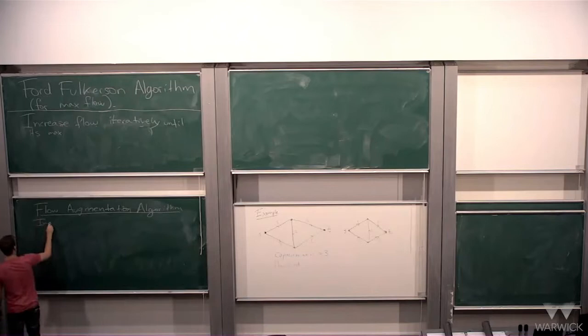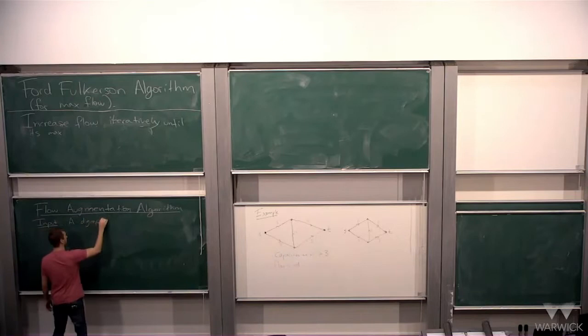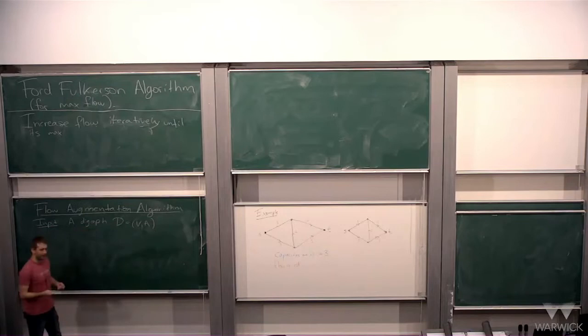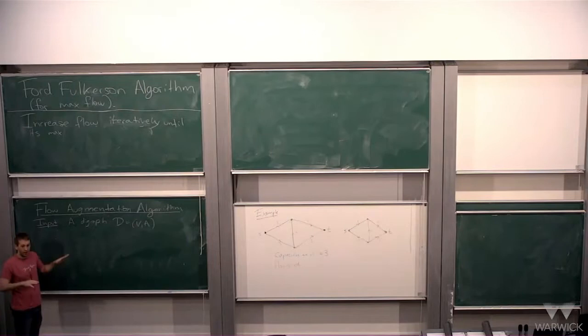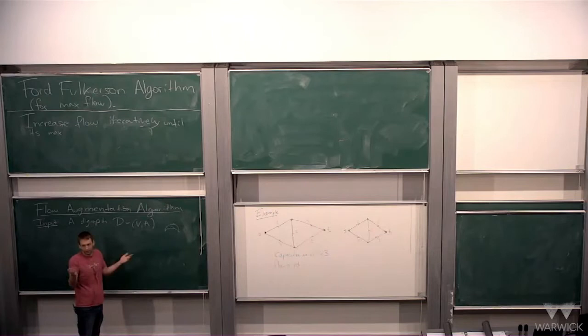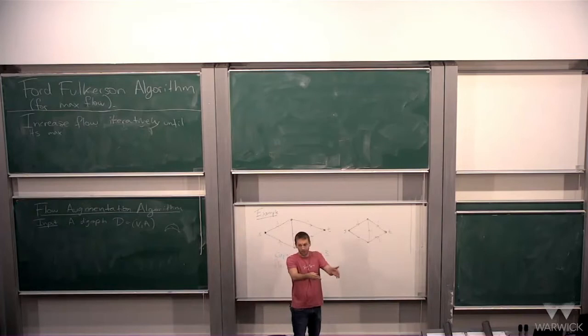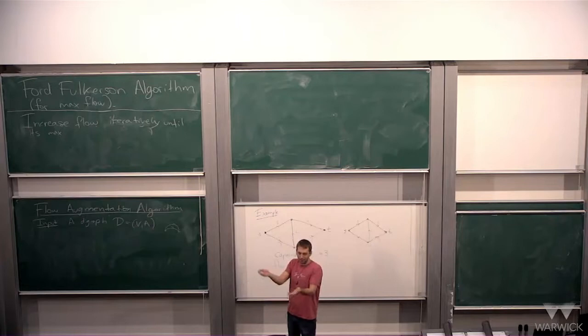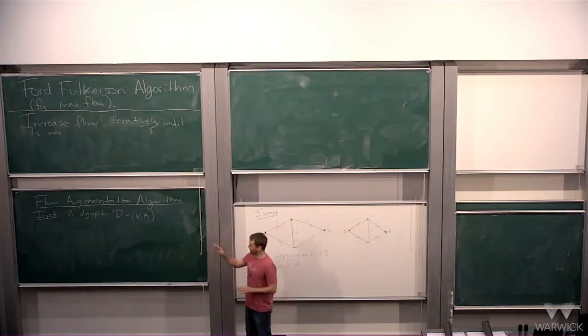This algorithm has as input a digraph. We can now just focus on digraphs because if you have an arc appearing multiple times with different capacities, you can replace it by one arc where you add up all those capacities — like two roads between the same two places, you just add up their capacities. So today we're not dealing with multi-digraphs, just digraphs.